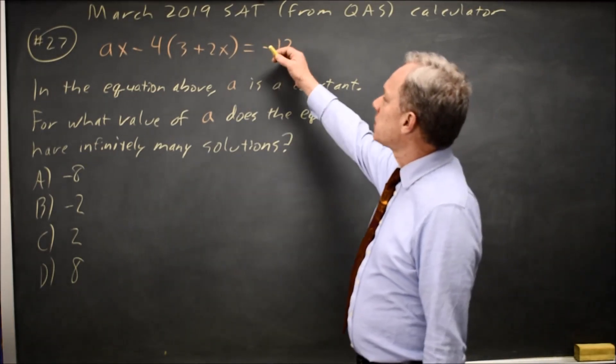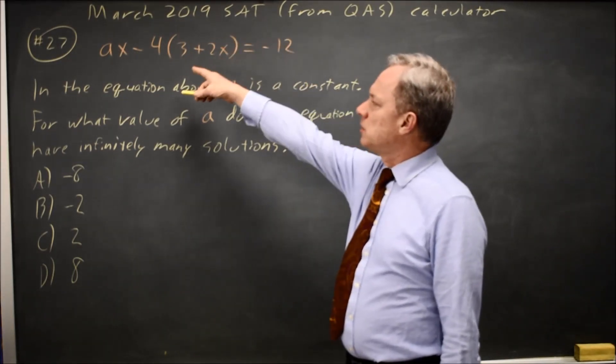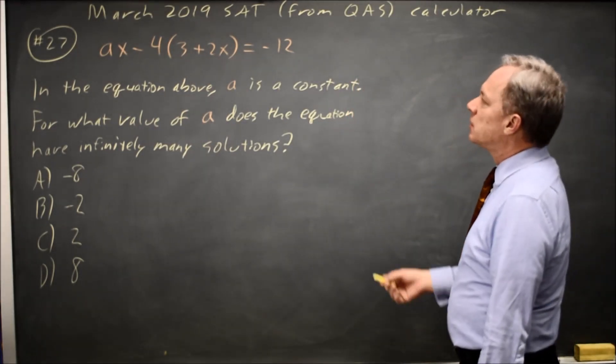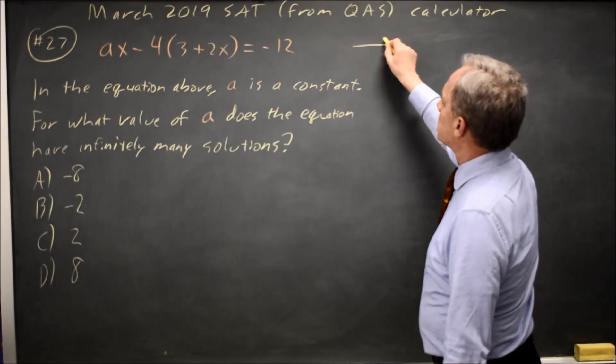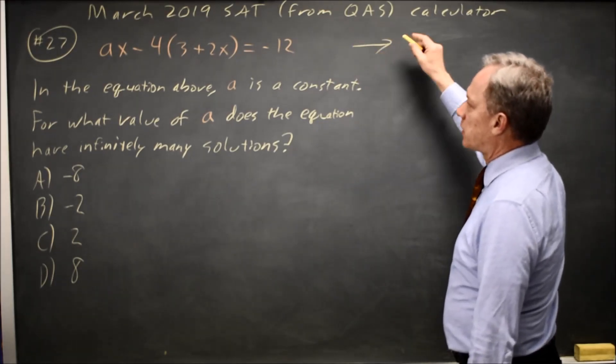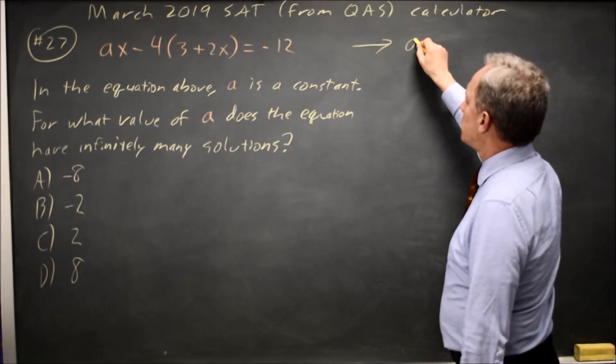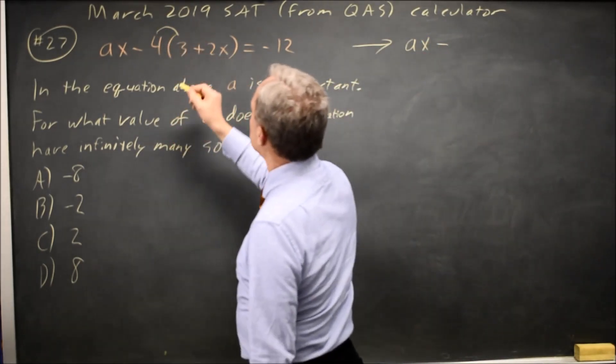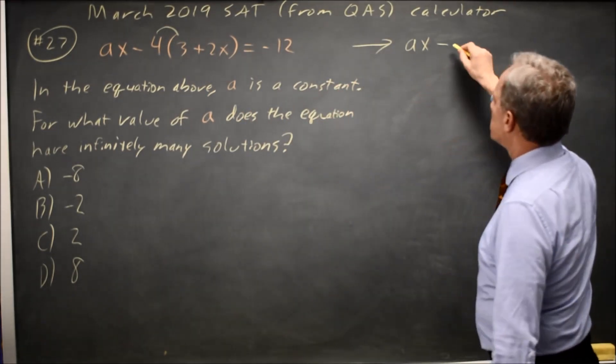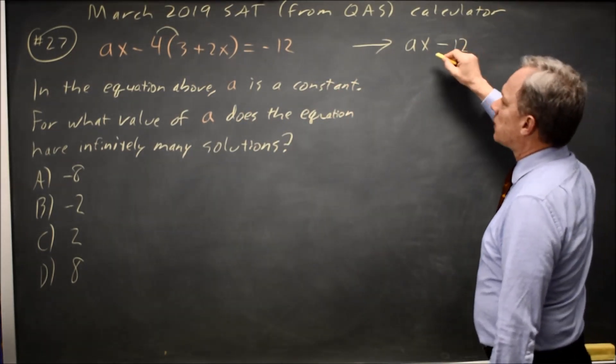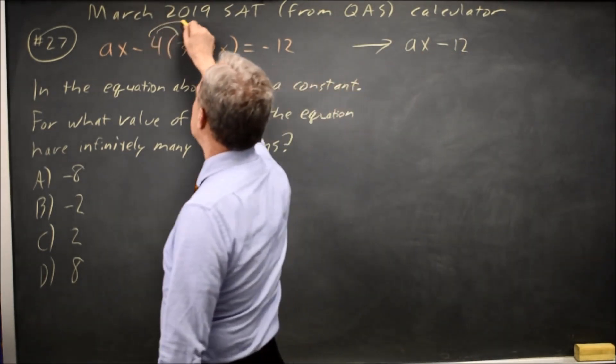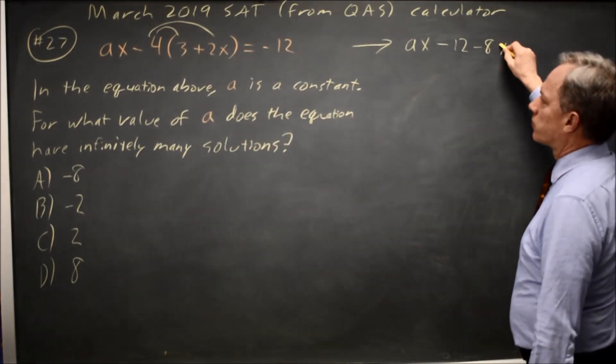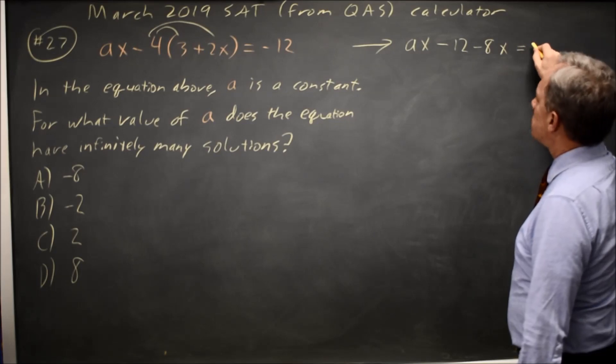Since the right-hand side is a constant, slope zero, to have infinitely many solutions, the left-hand side has to be a constant, slope zero. So let's take a look at that algebraically and then we'll look at a couple other options. I have AX minus, let's distribute the negative 4 to 3. Negative 4 times 3 is negative 12, and then negative 4 times 2X would be negative 8X. And I want that to be negative 12.